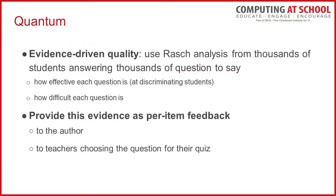I want to say more about how we might actually measure quality for crowdsourced questions. If you have data from tens or hundreds of thousands of students answering thousands of questions, it turns out you can solve a statistical simultaneous equation to discover how strong each student is, how hard each question is, and how much discriminating power each question has — that is, how much it sorts strong students from weak ones. This is standard in assessment expertise as Rasch analysis, and we'll provide this evidence as per-question feedback to question authors.